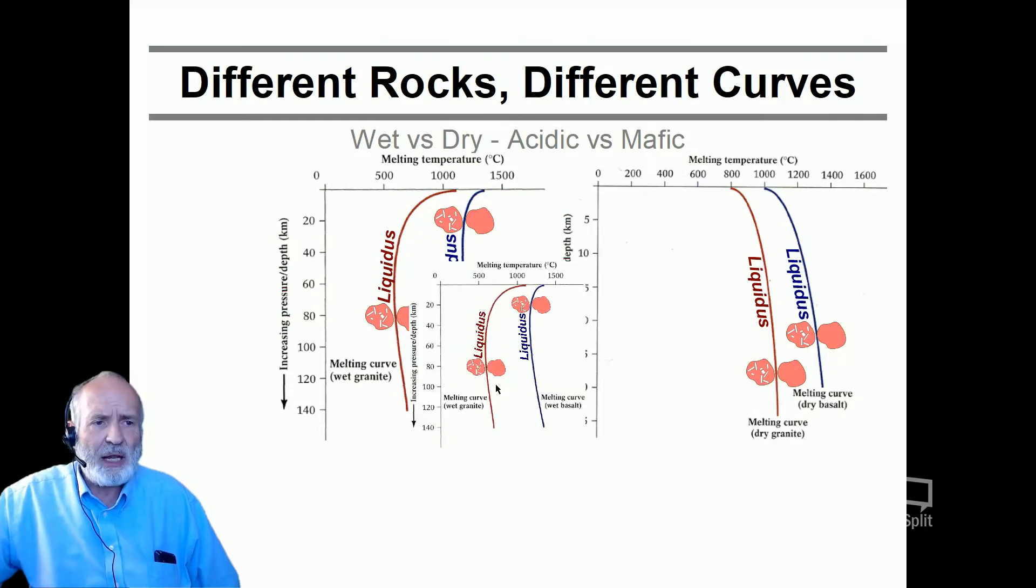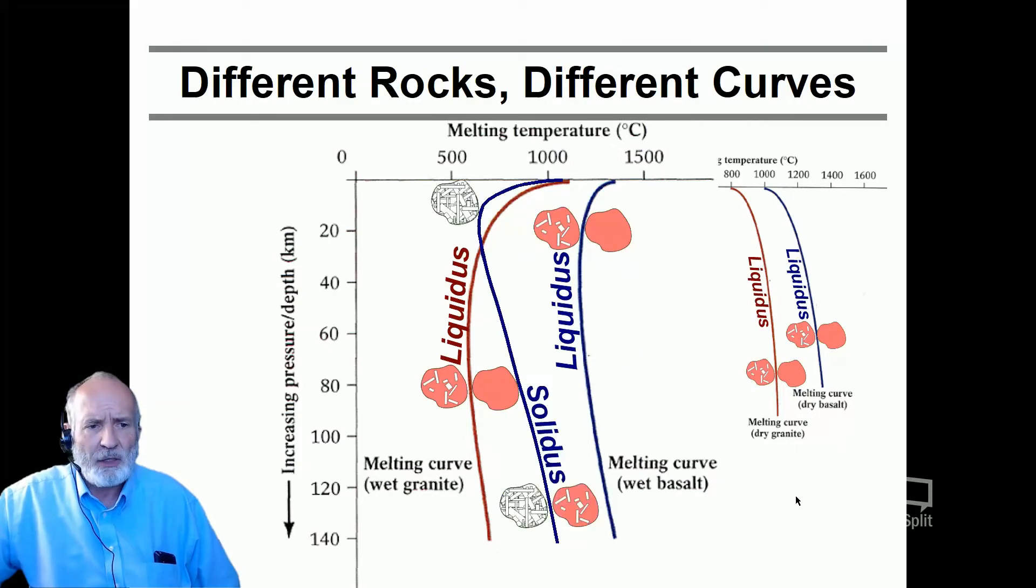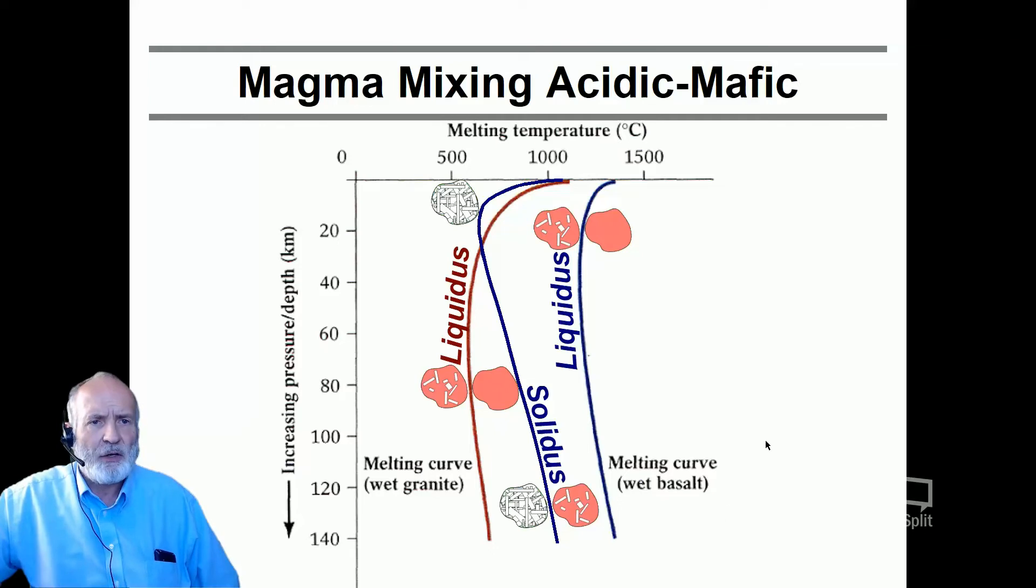Now, if we enlarge this picture here a little bit, and we also superimpose on that the solidus curve for a wet basalt, we notice something. There is some overlap. Here's where the liquidus of my granitic or acidic melt starts. Here's a liquidus of the transition for the basalt. But the solidus for the basalt here in blue, we have a little overlap area right there.